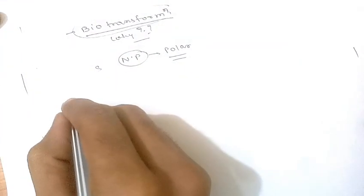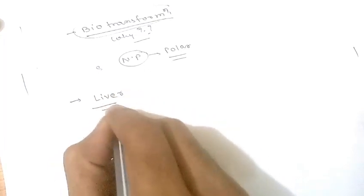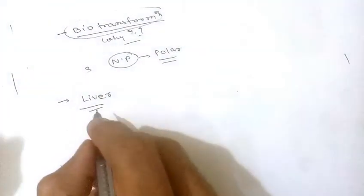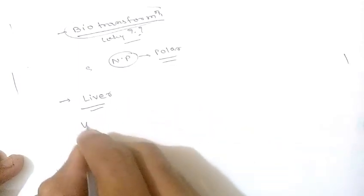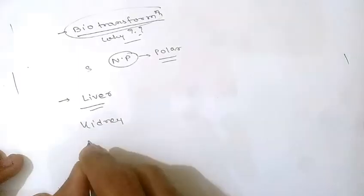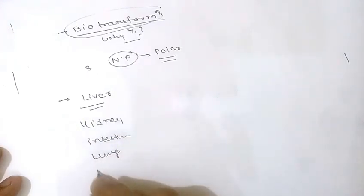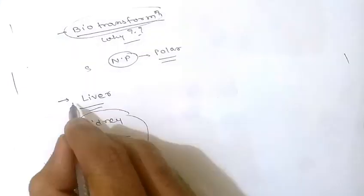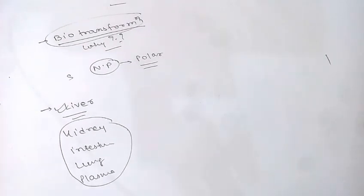The primary site for drug metabolism is the liver. Along with the liver, other organs also perform biotransformation: the kidney, intestine, lungs, and plasma. These are the sites where biotransformation also occurs, but the primary site for drug metabolism is the liver.